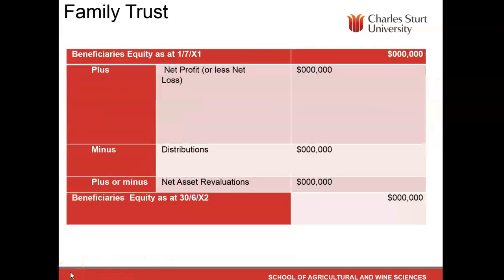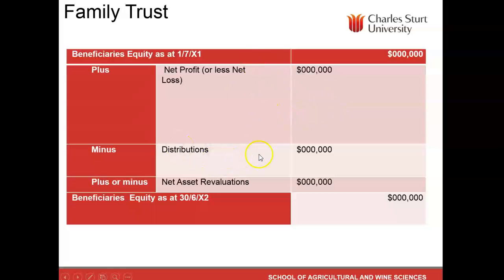For a family trust, we have the beneficiaries' equity at the bottom of the balance sheet. We take the opening balance, add or deduct the profit or loss — remembering it's net profit, so if we're using an operating profit figure we also need to make the adequate adjustment for taxation — minus the distributions made to the beneficiaries, which is how profit is distributed from the family trust, plus or minus the net asset revaluation, again in this case probably land. We then end up with the beneficiaries' equity.